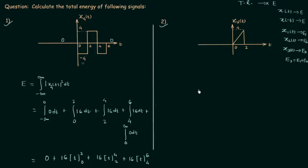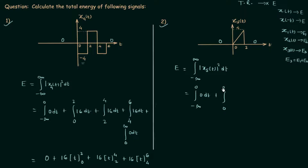In the second problem we use the same approach, but the signal is different. From minus infinity to zero the signal is zero, from zero to two it is linear with some slope, and from two to infinity it is again zero. Using the energy formula, the integrals from minus infinity to zero and from two to infinity are both zero, so we are left with the integral from zero to two of |X5(t)|² dt. Our first task is to find the equation of X5(t).